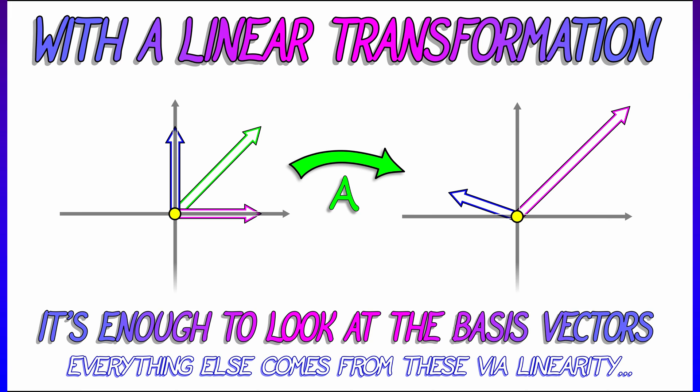Take a linear combination of these two. Let's say i plus j. What does A send that to? Well, it sends it to the sum of the outputs. Again, because A is a linear transformation. You can do this with rescaling. You can do this with any linear combination of those i and j vectors.